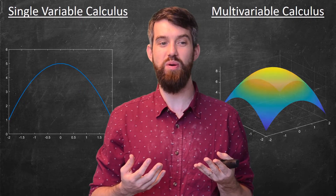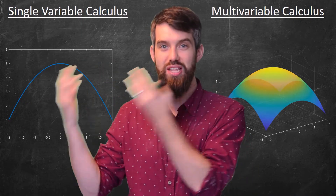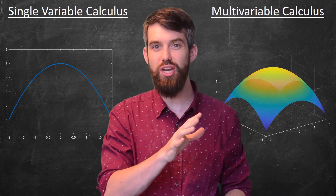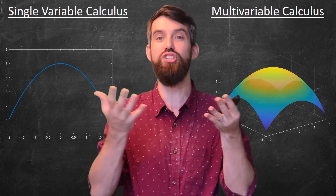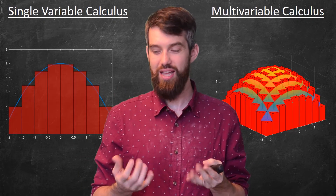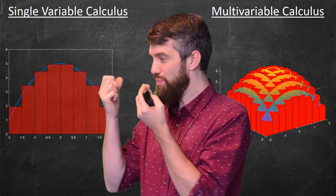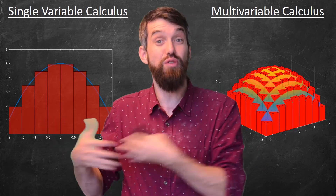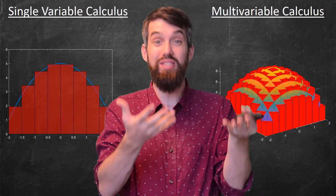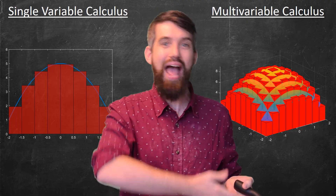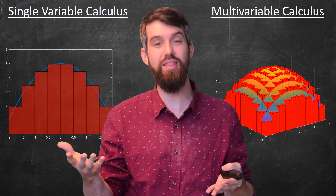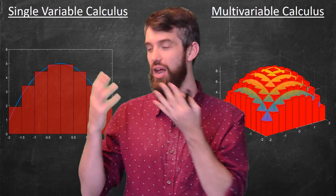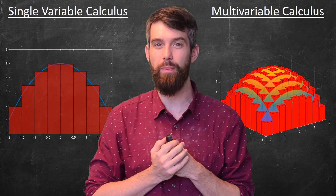This multi-variable calculus problem is completely analogous to a single variable problem from first year calculus, which was the area underneath a curve. The idea was that we would take the region and break it up into a bunch of different rectangles. The area of each rectangle was easy to compute, and then we could add up all of those areas to get an approximation for the area under the curve.